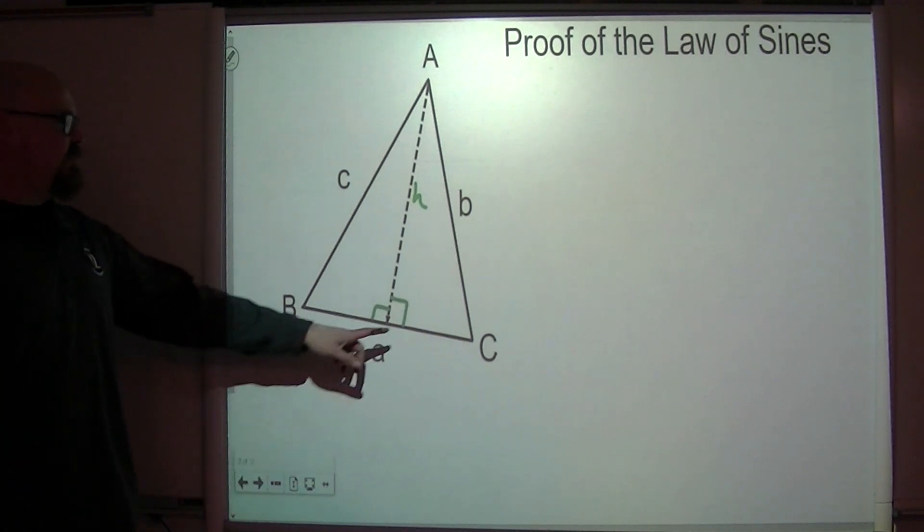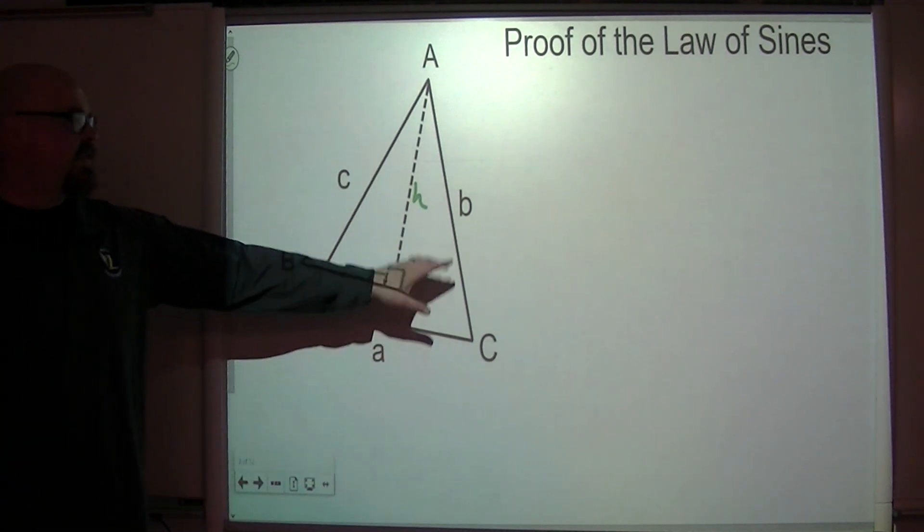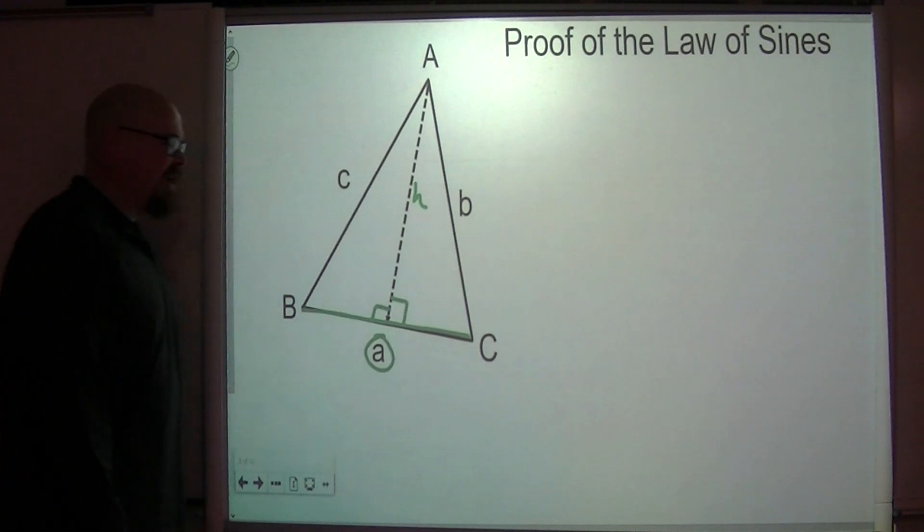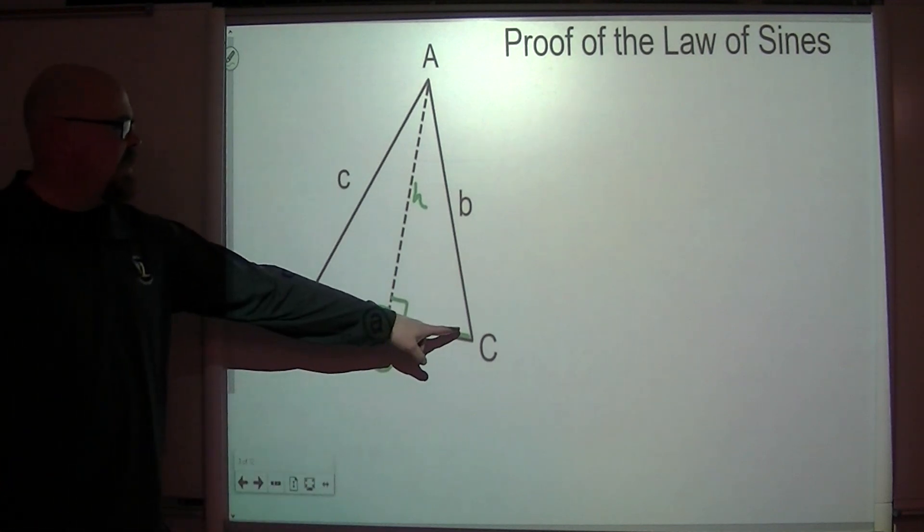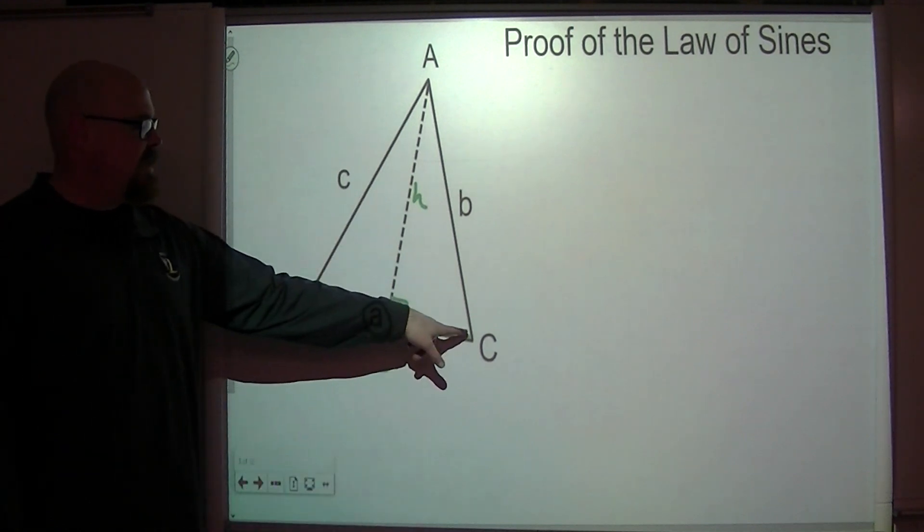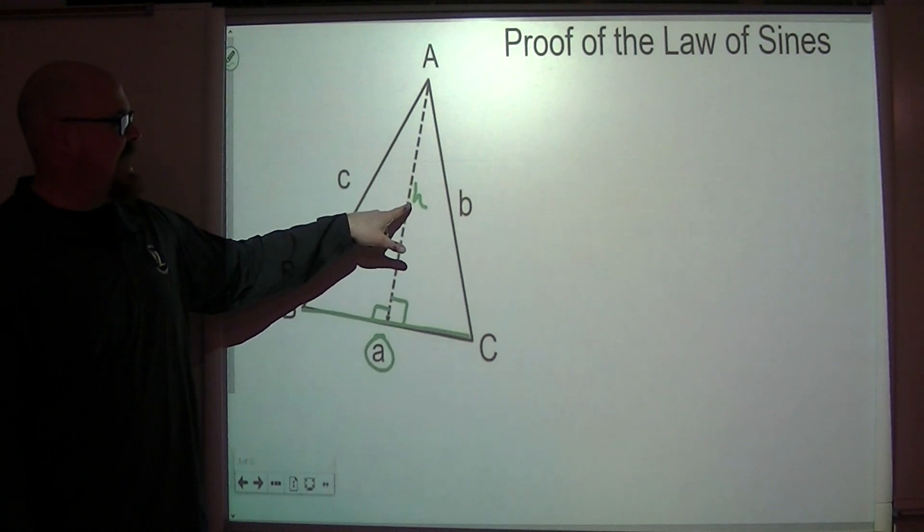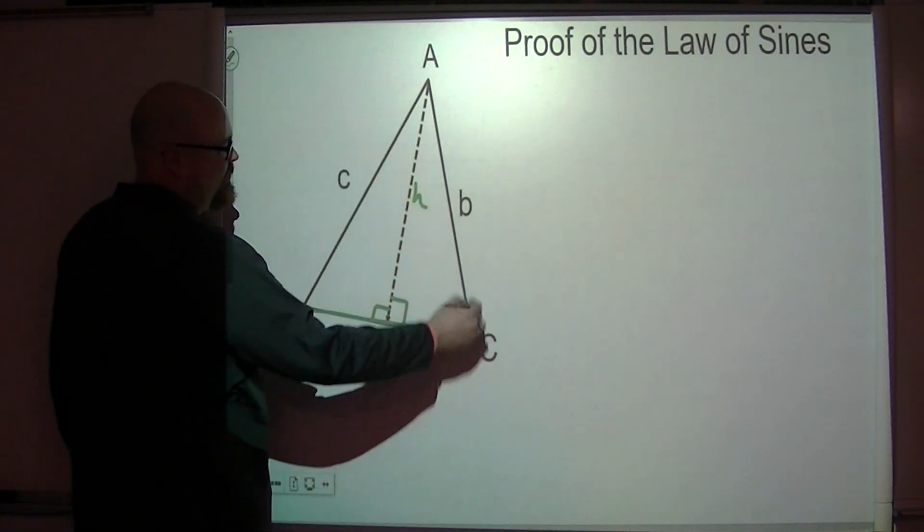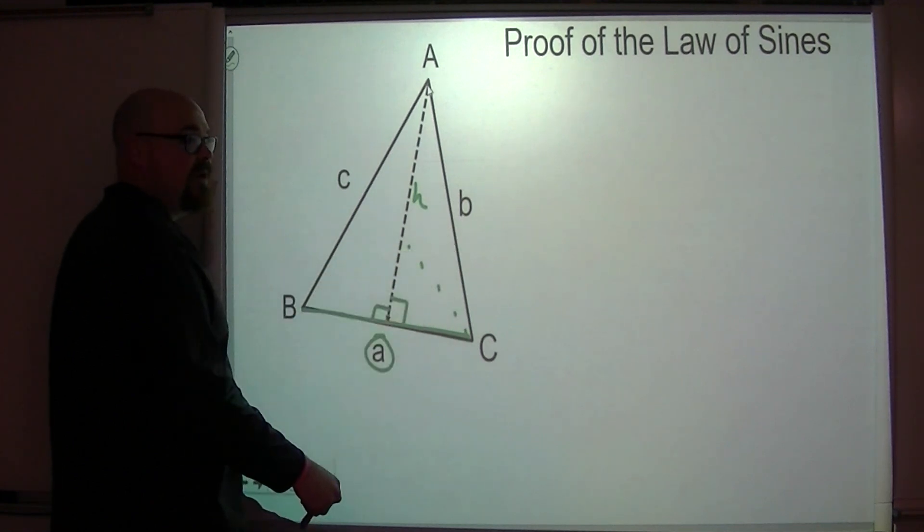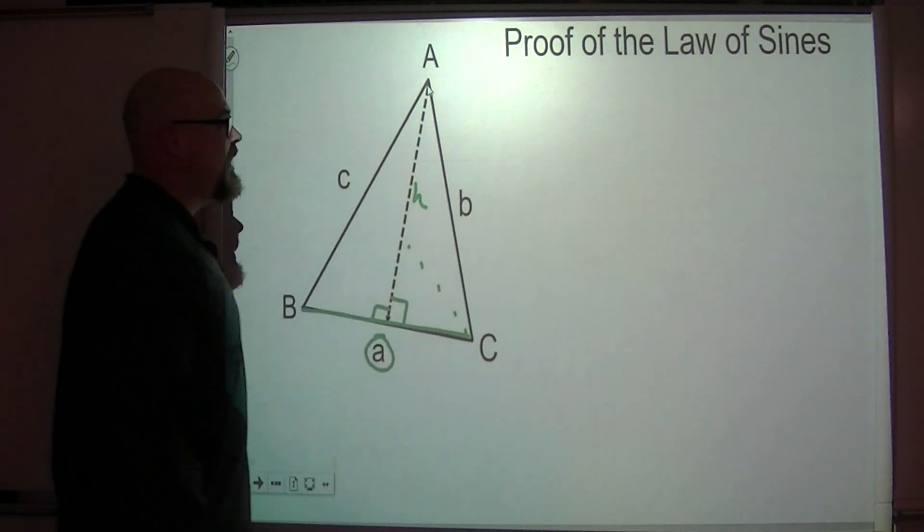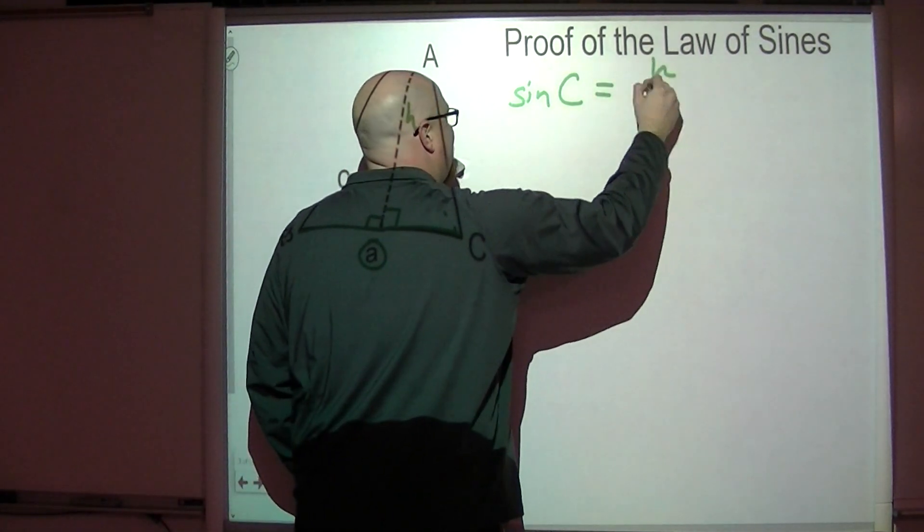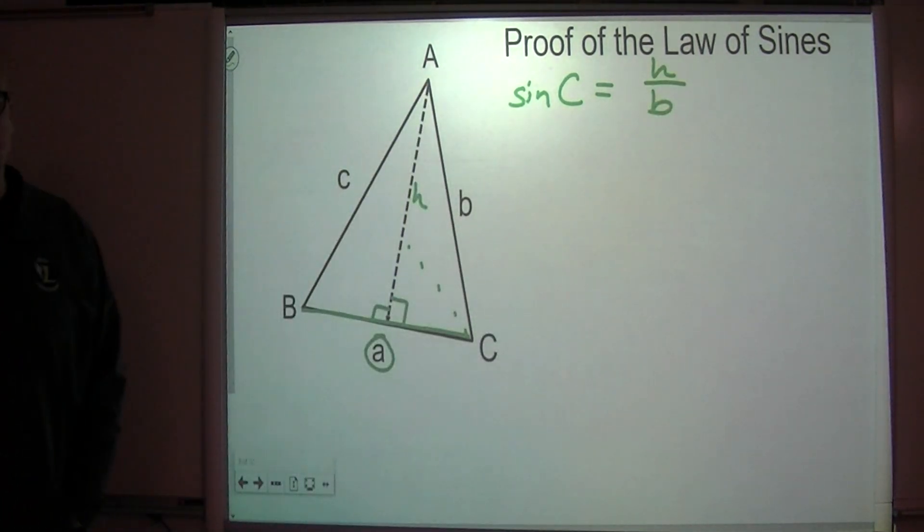If I wanted to express angle C with some of the information that's up here, I can't use A because side length A is this entire side length. But I could say that, I could use H and B, and if I wanted to create some trigonometric relationship between angle C, side H, and side B in this right triangle, I've got the opposite side H and the hypotenuse B. So the opposite side hypotenuse involves the sine ratio. I could say that the sine of angle C is equal to the opposite side over the hypotenuse.